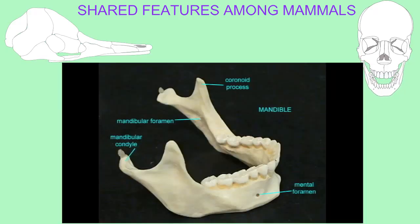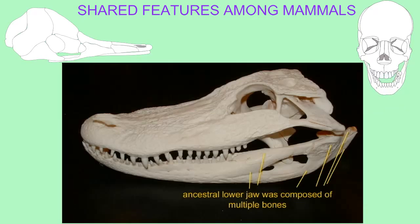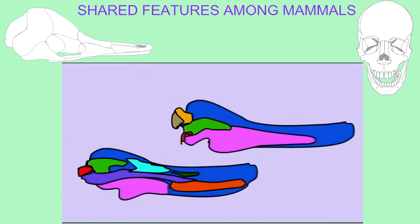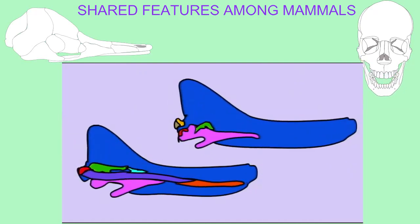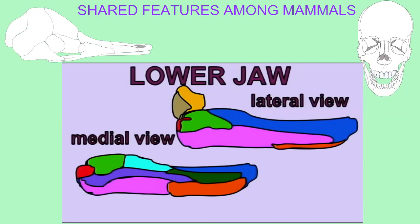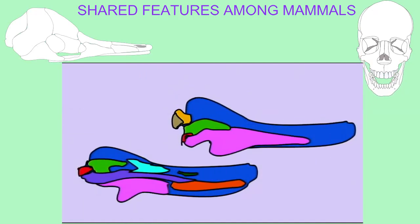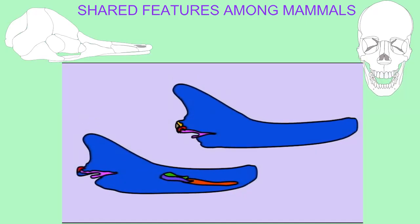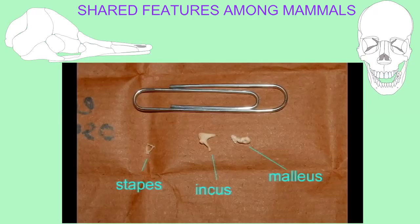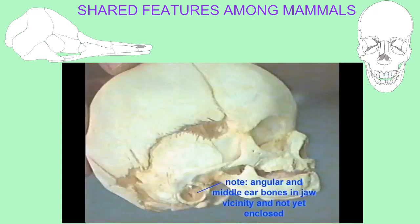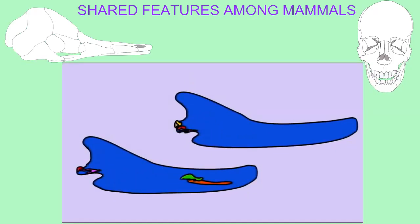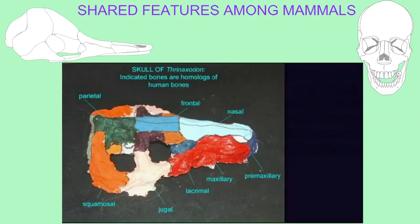The lower jaw was ancestrally composed of multiple bones, but one bone, the dentary, became larger and larger until it replaced the others and created a new jaw joint. Some of the ancestral jaw bones were incorporated into the middle ear, where they allowed for a greater ability in hearing for the early mammals.